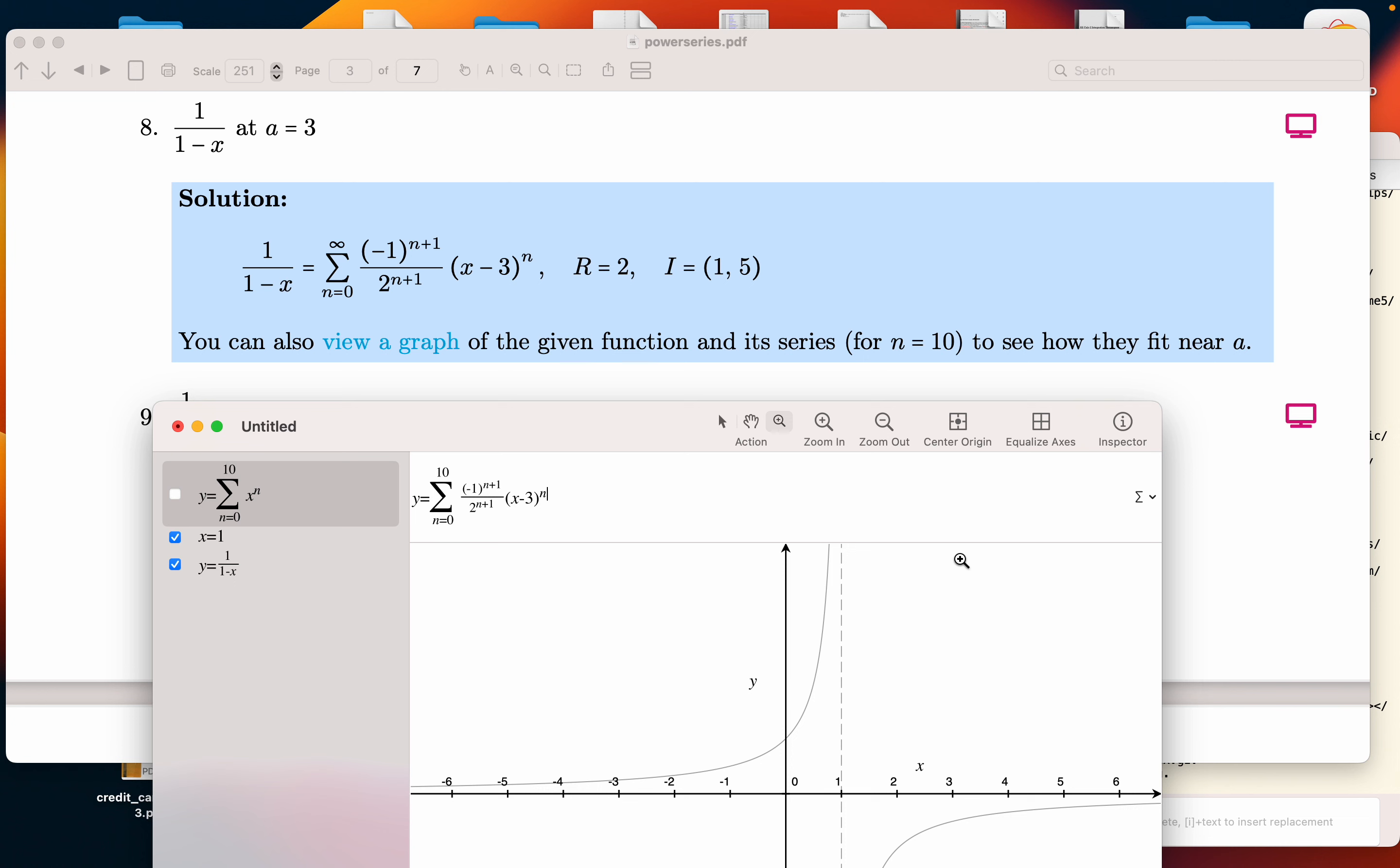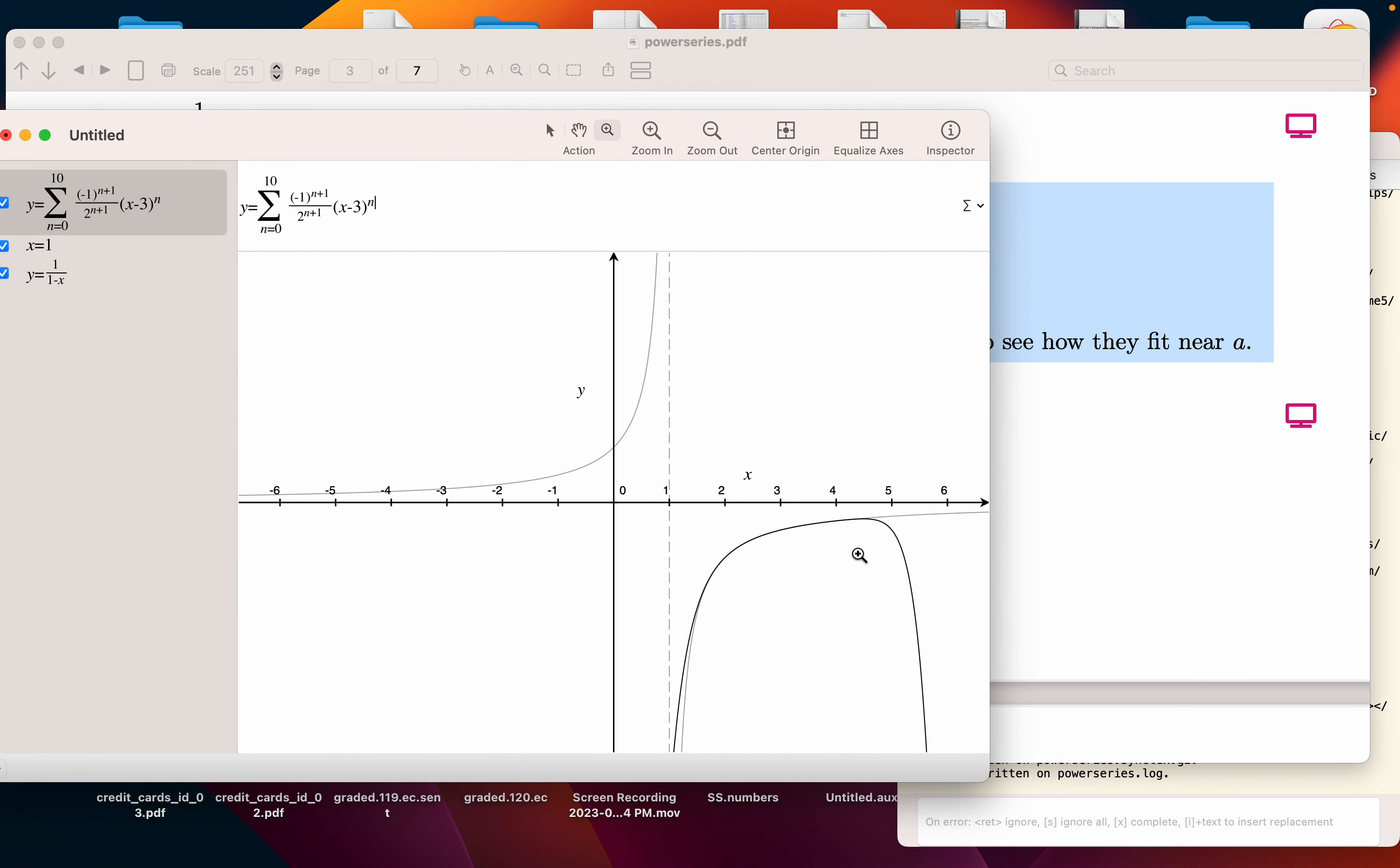And we're going to say this fits between 1 and 5, the radius being length of 2. All right, let's take a look. And what are we seeing over here? Let's go through that one step at a time.